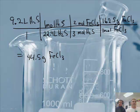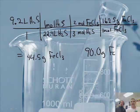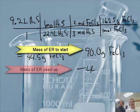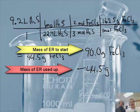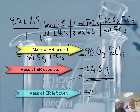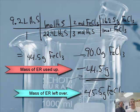We had 90.0 grams to begin with. So we take 90.0 grams of FeCl₃ and subtract 44.5 grams — the 90 grams is how many we had and the 44.5 grams is how many we used up. The difference is 45.5 grams of FeCl₃ remains.